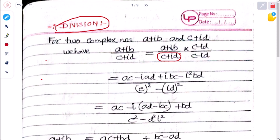After multiplying, the numerator becomes: a·c − i·ad + i·bc − i²·bd, which gives ac − iad + ibc − i²bd. The denominator uses the algebraic identity (a + b)(a − b) = a² − b², giving c² − (id)² = c² + d².